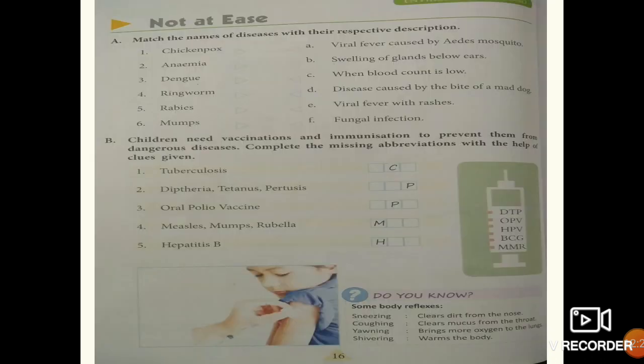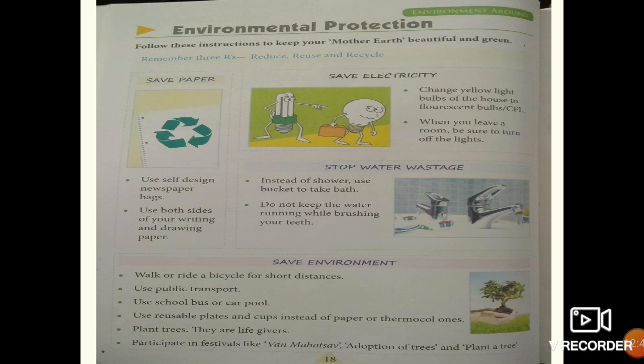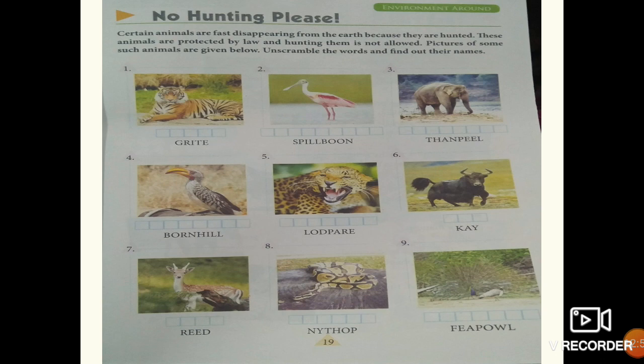Children, I have just read it out — you have to match and then write the vaccines. You can check the answers for correct spelling. Space Territory has questions one through six — write them down and solve the crossword. Then Environmental Protection — save electricity, stop water waste, save environment. No Hunting Please — unscramble and write the correct names of disappearing animals.